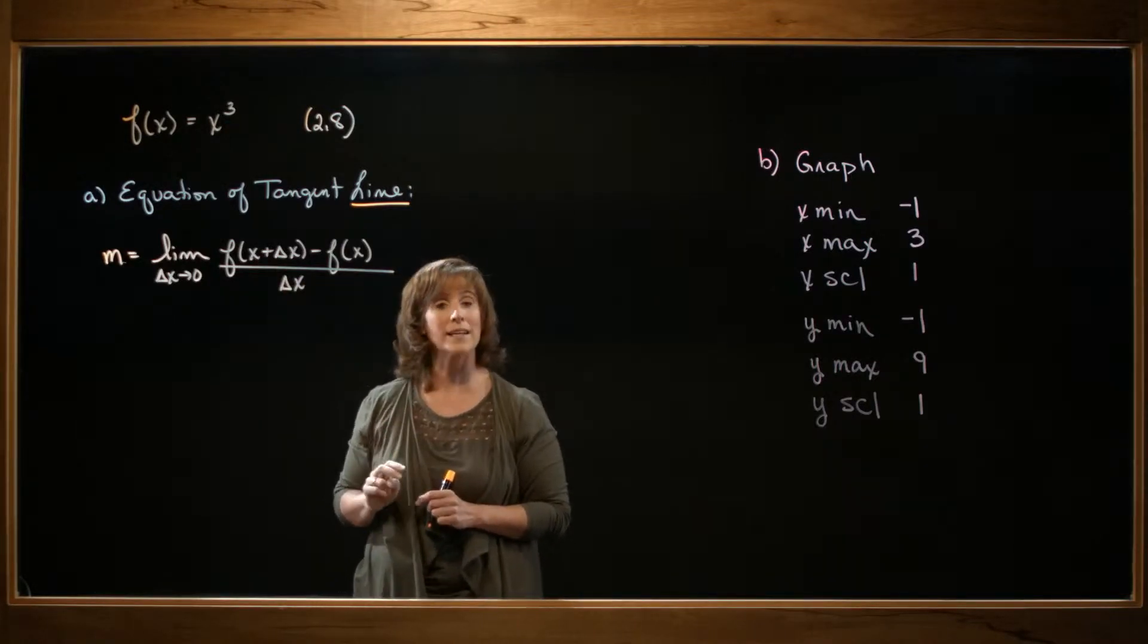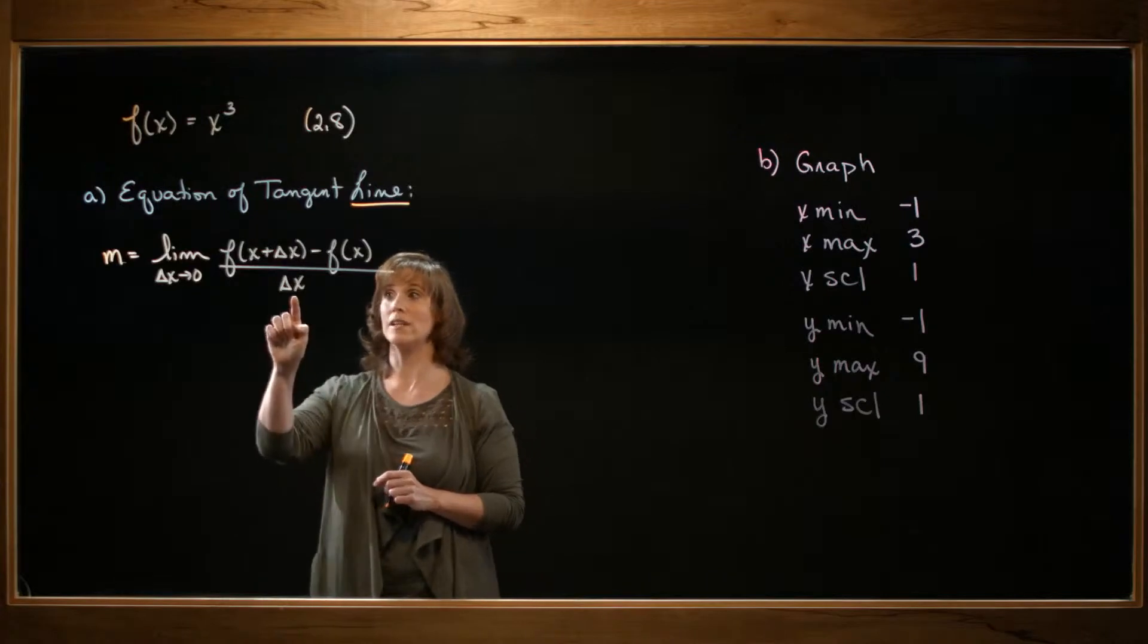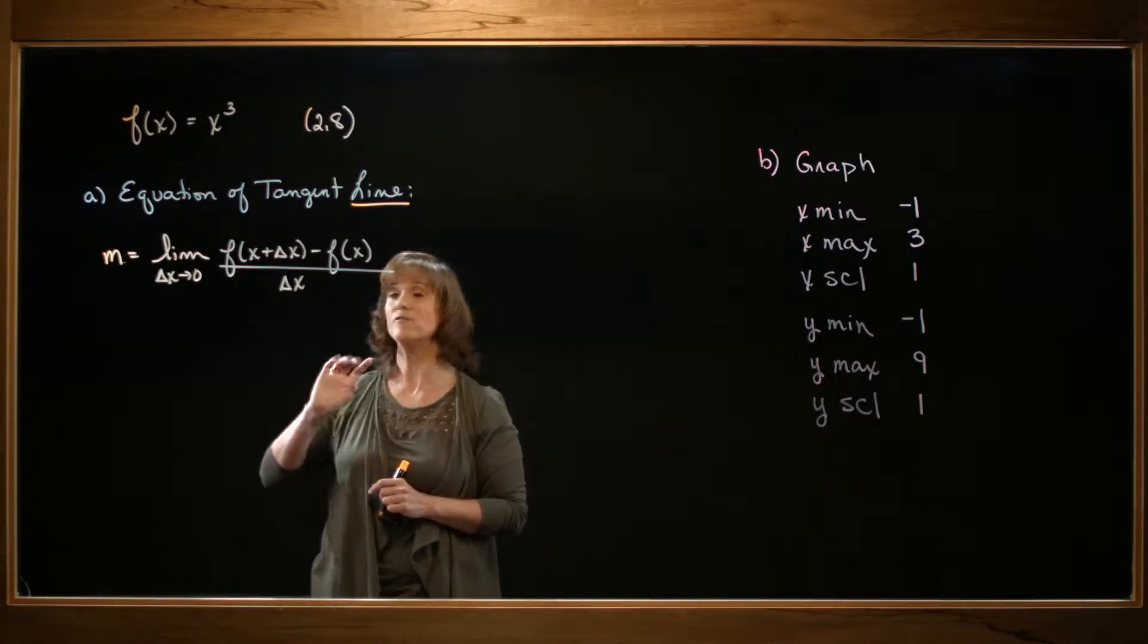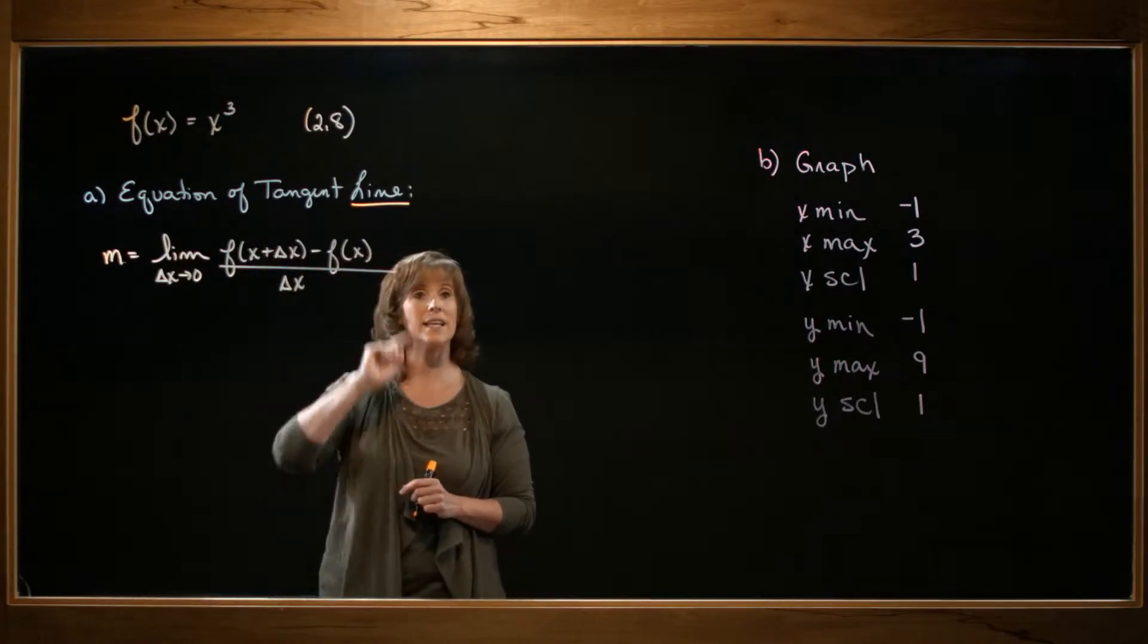We'll be looking at the function value when the input is x plus delta x. That's the first part. The second part is subtracting the f of x. The third part is dividing by delta x. And finally, part four is taking the overall limit.